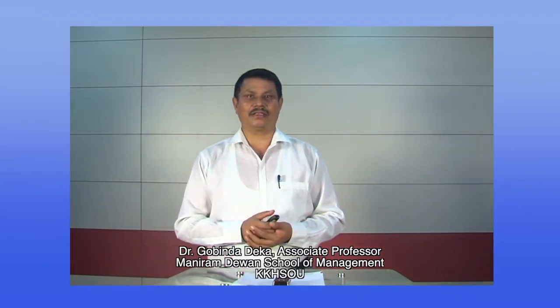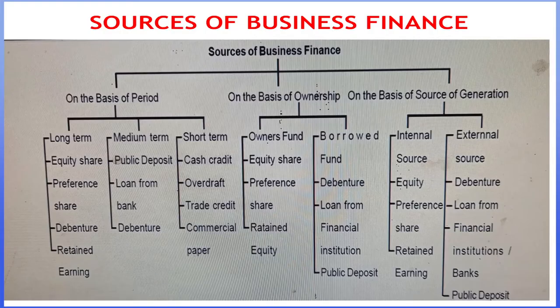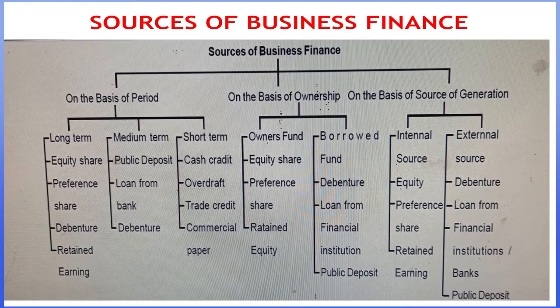Part 2 will discuss about sources of business finance. Sources of business finance may be discussed from three various angles, and they are: on the basis of period, on the basis of ownership, and on the basis of source of generation.